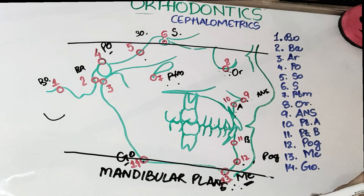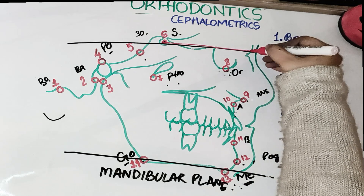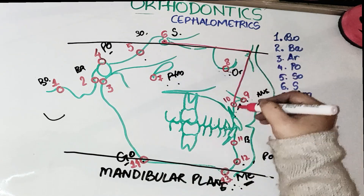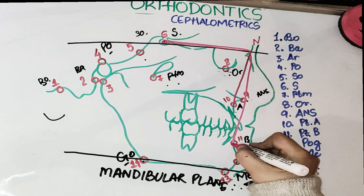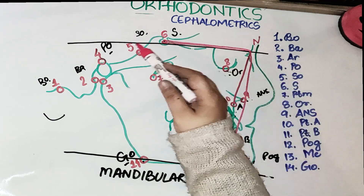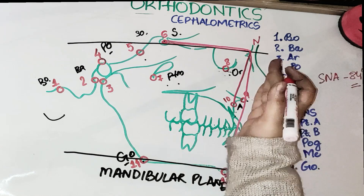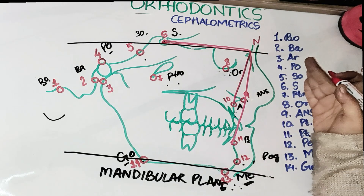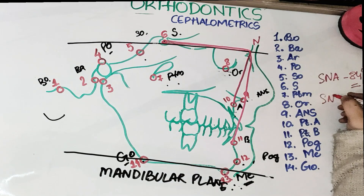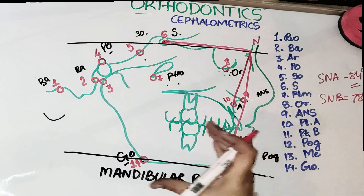Now we have three angles: SNA, SNB, and ANB. The SNA angle ideally should be 84 degrees in Caucasian people. If the SNA angle is greater than 84 degrees, that means there is maxillary prognathism. The SNB angle is supposed to be 78 degrees. If this angle is less than 78 degrees, that means there is mandibular retrognathism.